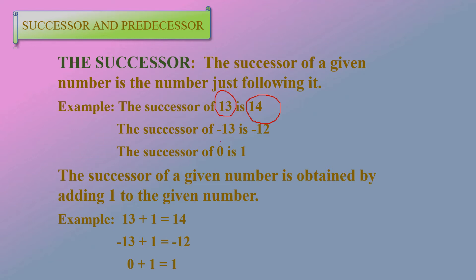One more example: here –13 is the given number. The next number to the right is –12. –12 is just following the given number –13, so –12 is called the successor of –13. Also, 0 is the given number — 1 is just following 0, so 1 is called the successor of 0.